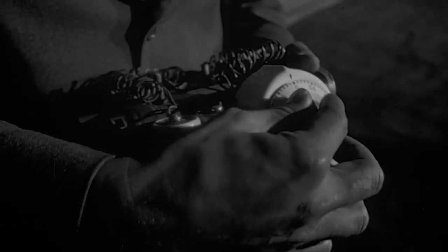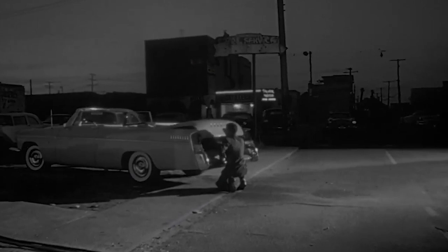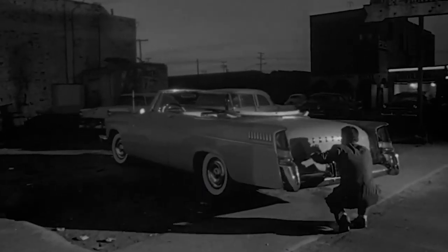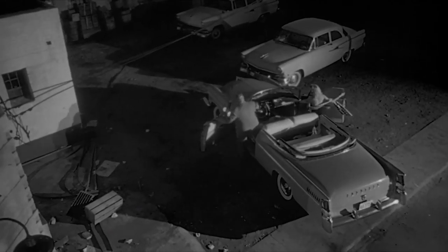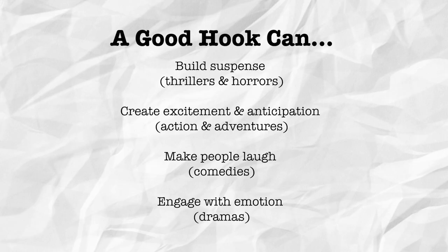Take for example Touch of Evil from 1958 — one of my favorite opening sequences. The very first image we see is a man setting the timer on a bomb. Right off the bat, I'm hooked. The very next thing we see is that he runs and puts that bomb inside the trunk of a car. After that, we see a couple get inside the car and they pull off. This is what I mean by hooking the reader — it builds suspense and gives us anticipation about what we expect to see next.